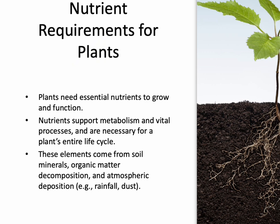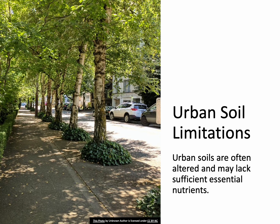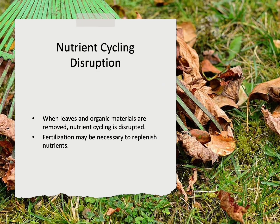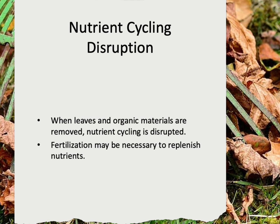A nutrient is an essential element involved in tree metabolism or necessary for completing the life cycle. Trees get nutrients from weathering and minerals in the soil, the decomposition of organic matter, and atmospheric deposition like rainfall and even dust particles. Urban soils are often altered and don't contain sufficient amounts of essential elements, which can limit tree health and growth.